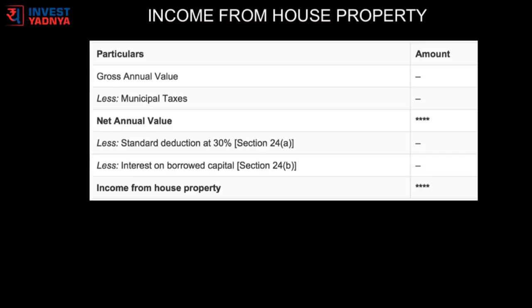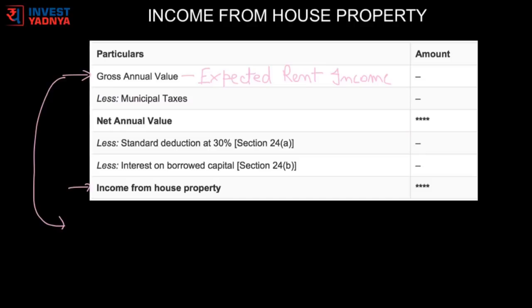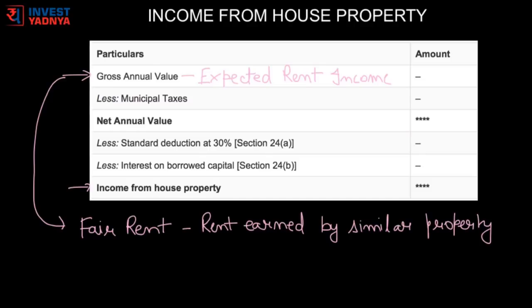Income from house property shall be determined in the following manner. The most important thing is to calculate gross annual value. Gross annual value is the amount at which we can expect the property to be let out and earn an income — this is the rent a similar property will earn in the same neighborhood, also called fair rent, or we can use the municipal valuation if that is available.